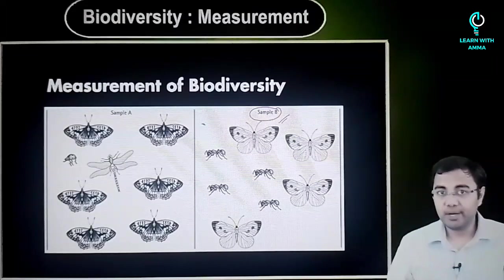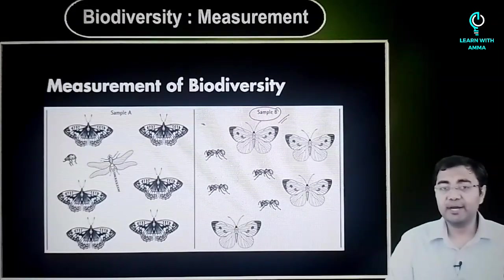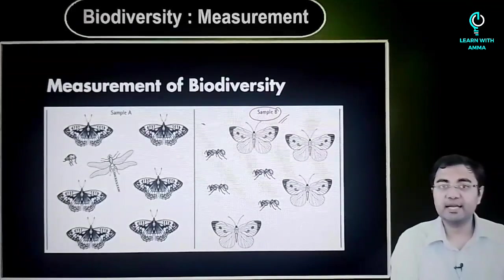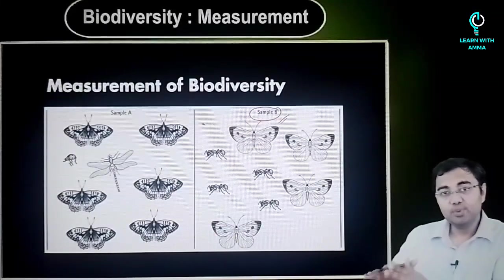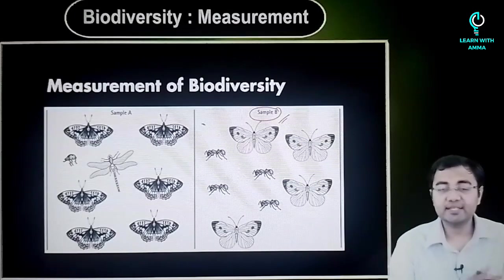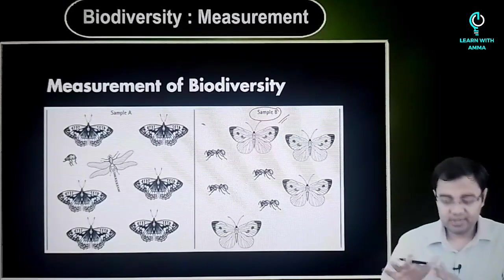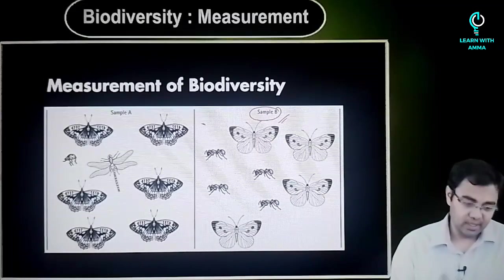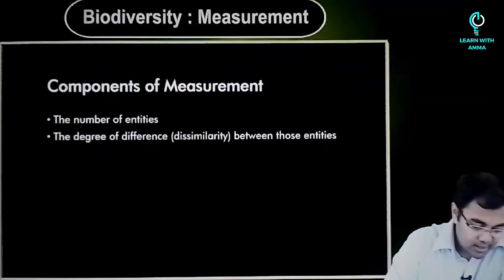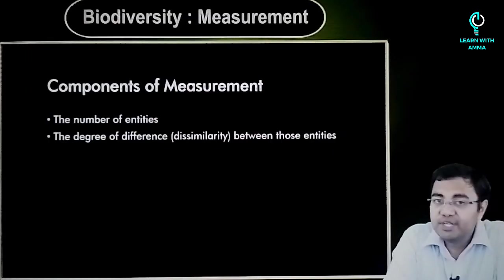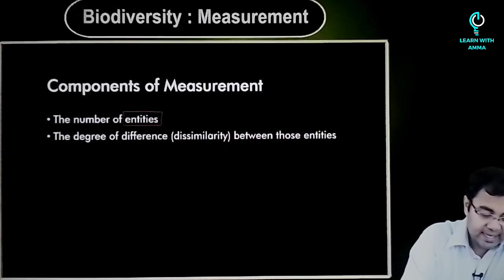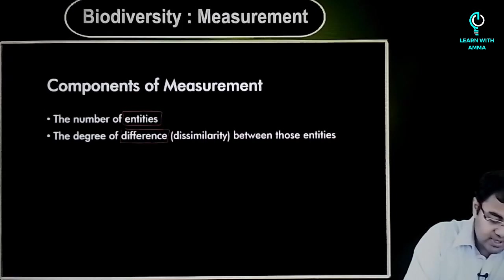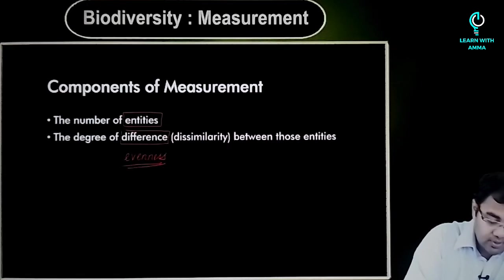So when you try to measure biodiversity, it's not only about the numbers. You cannot just go by numbers. For example, let's say one sample has 100 different kinds of animals and the other has 80, but 80 is more evenly distributed as compared to 100 — in that case, perhaps we'll try to go with 80 because it has a higher chance of survival. When we discuss the measurement, there are two major components: one, the number of entities, and second, the degree of difference, which is basically the evenness that we see in a given ecosystem.